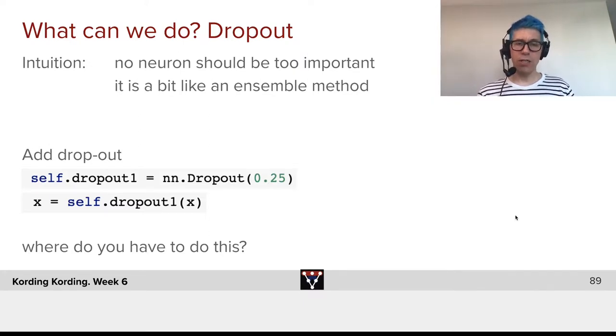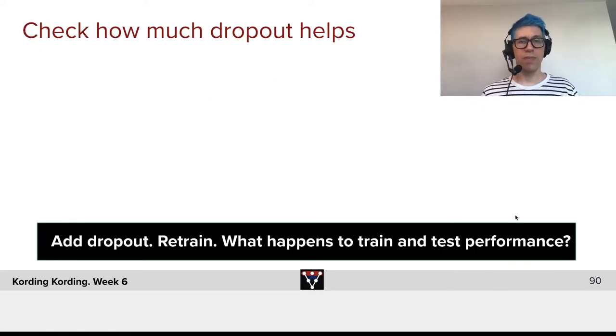And now, where do you have to do that? The first one goes into the initialization, and the second one goes into the forward loop. So why don't you check how much dropout helps to alleviate the problems of overfitting. What happens to train and test performance?